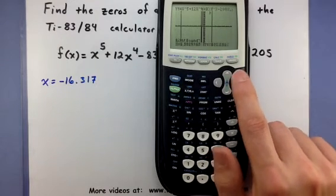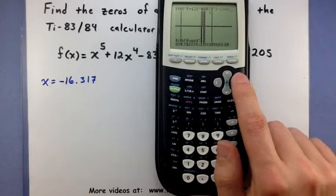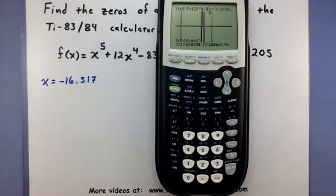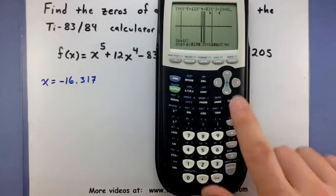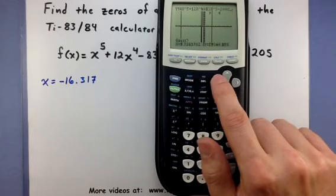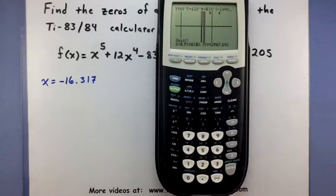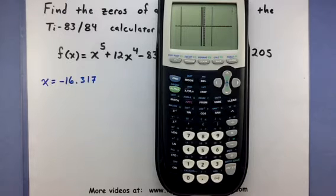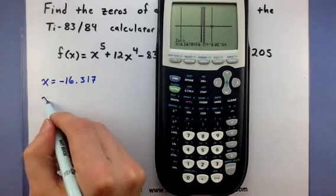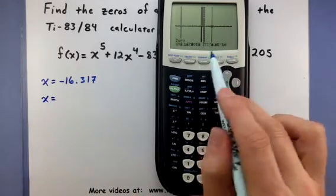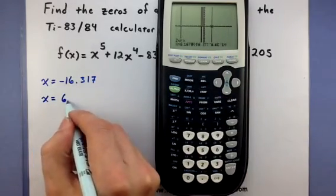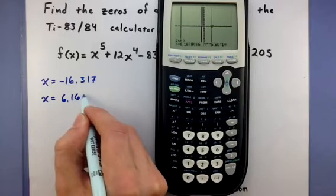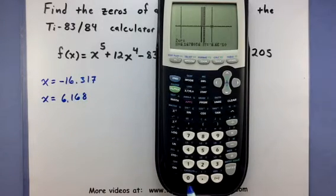Pick a right bound. I'm going to put the right bound at ten. Press enter. And let's make a guess, say around eight point five. That sounds good. Enter. Alright, so actually it looks like I was a little bit off because the calculator found it at six point one six eight and I've rounded that one as well.